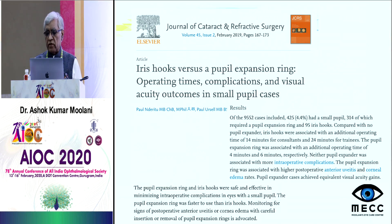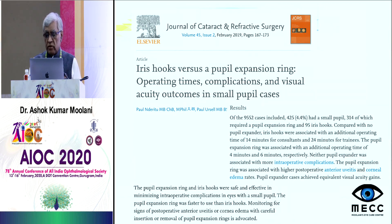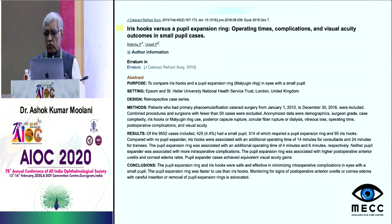My main talk is to compare the use of two mechanical devices: iris hooks and pupil expansion rings. In an article in JCRS from February 2019 by Liderito and Ursel from the UK, comparing iris hooks and pupil expansion rings, they found iris hooks took longer surgical time compared to expansion rings, while there was more anterior uveitis and corneal edema after expansion rings. However, both were safe in minimizing intraoperative complications.